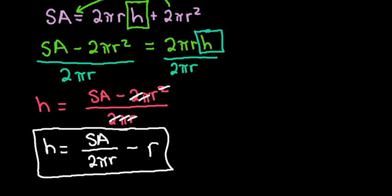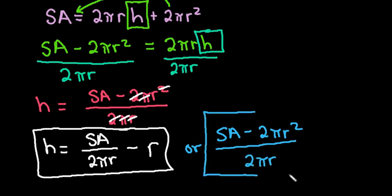So this is an acceptable answer, or we could have left it as the surface area minus 2 pi r squared over 2 pi r. So this is one of those things that sometimes on like the SAT or the ACT or any kind of standardized test when you're trying to solve for literal equations, sometimes they'll write it as an equivalent expression, and so you have to be able to recognize what the equivalent expression is.